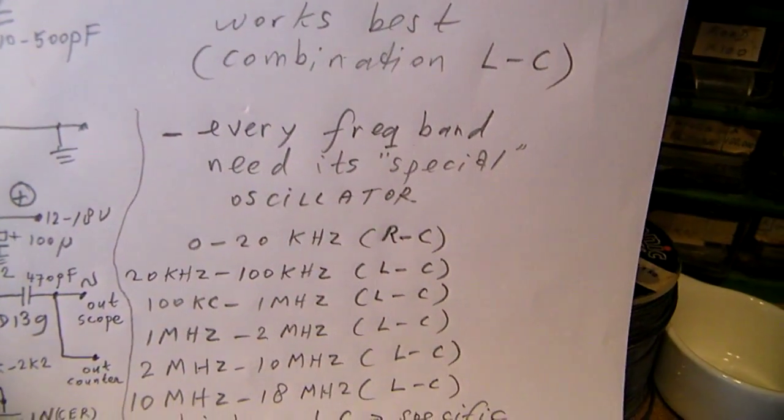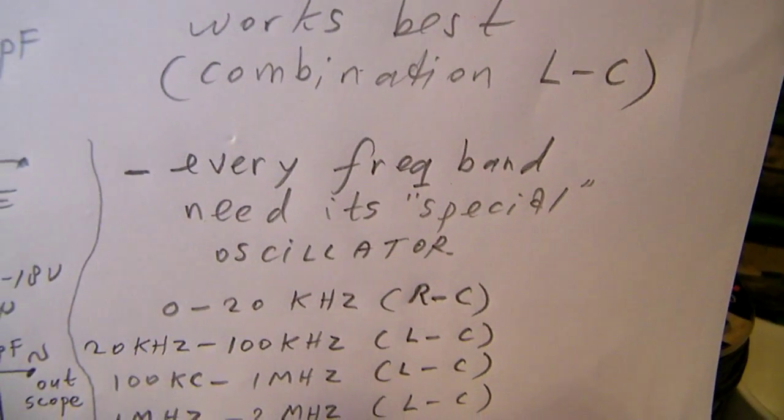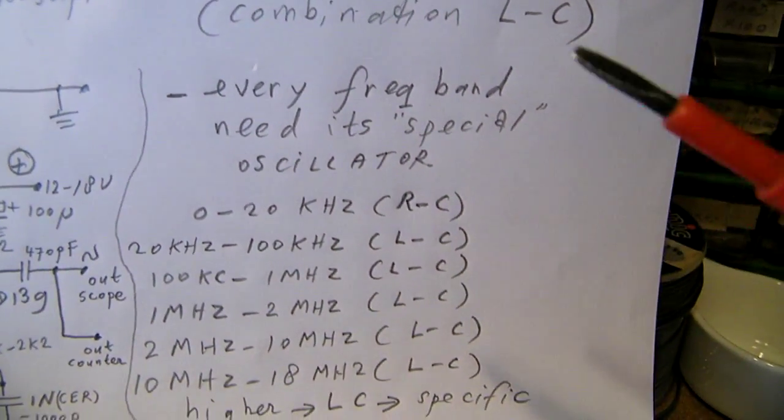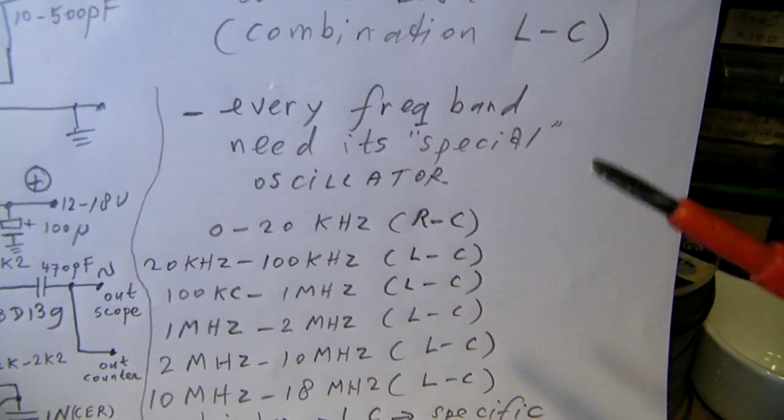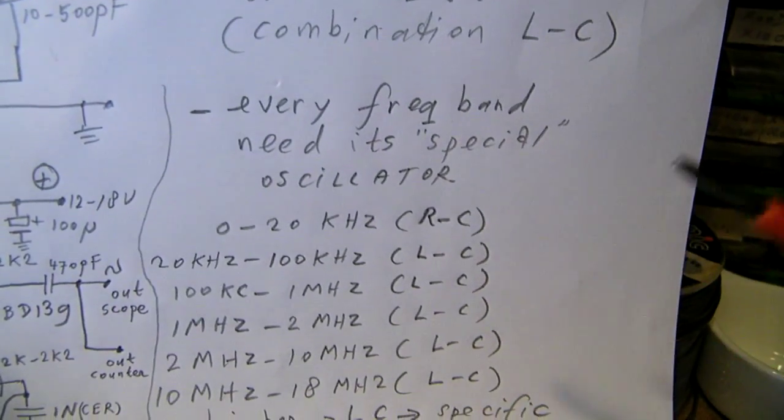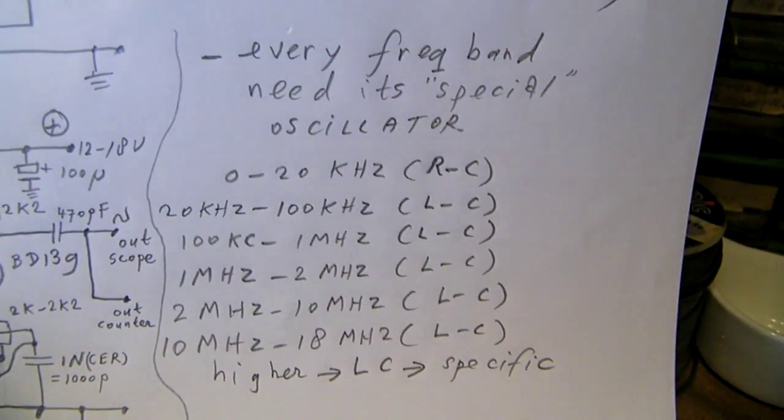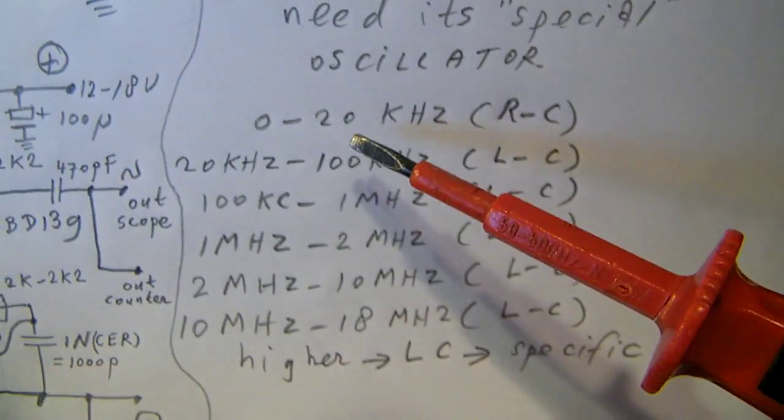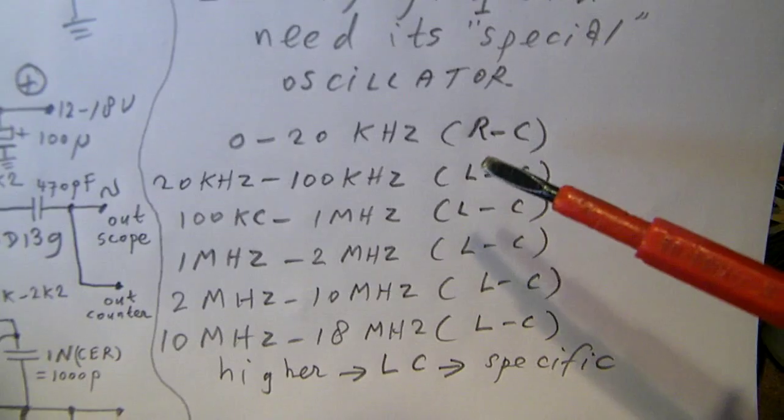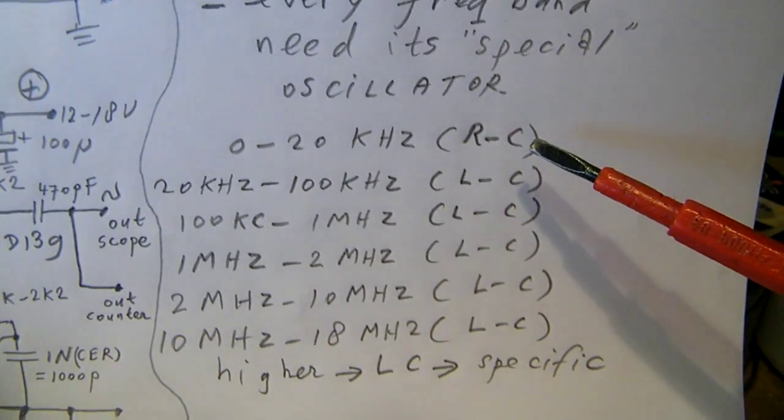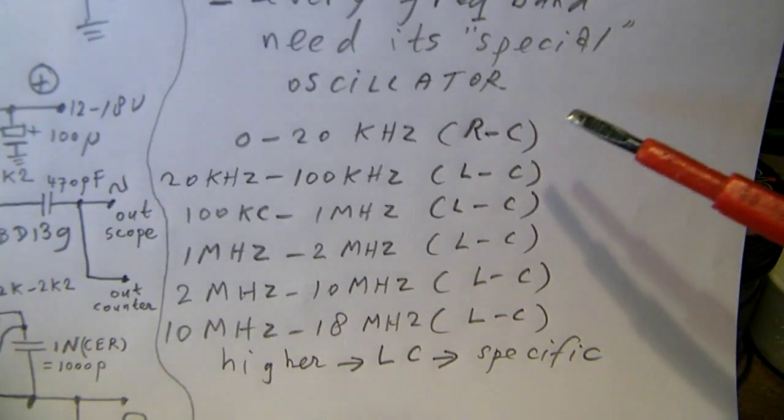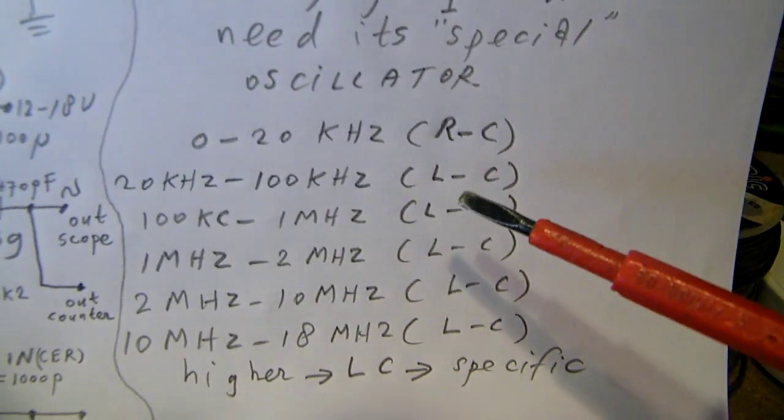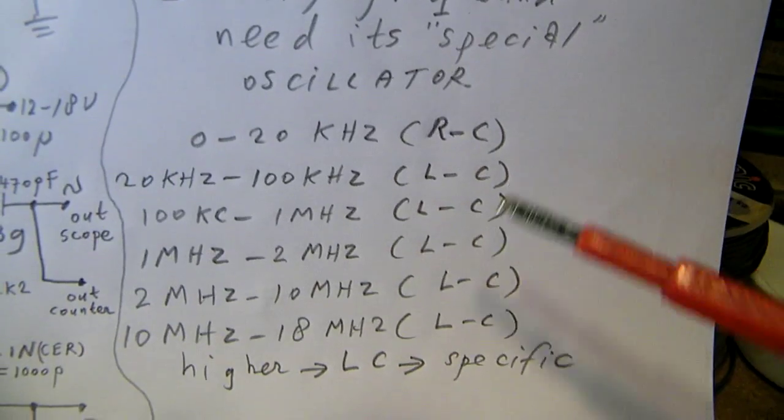And there is also something to tell about the different frequency bands. There are quite a few frequency bands. And in fact every band needs its special, specific oscillator to work properly. So this is the division that I've made: zero to twenty kilohertz, a resistor capacitor oscillator works properly. And on all higher frequency bands, a coil and the cap works better.